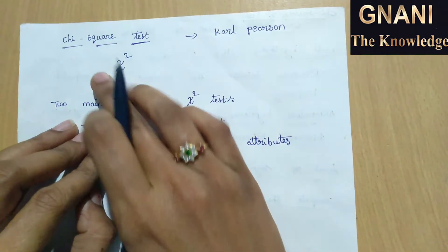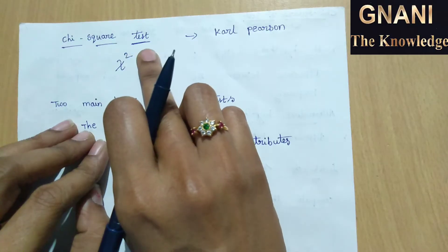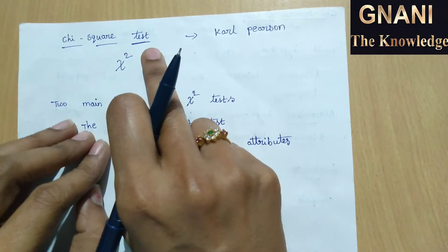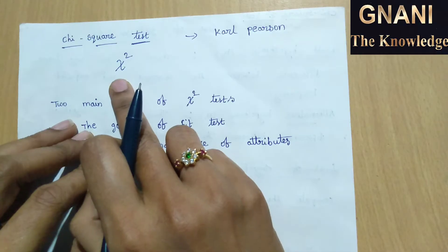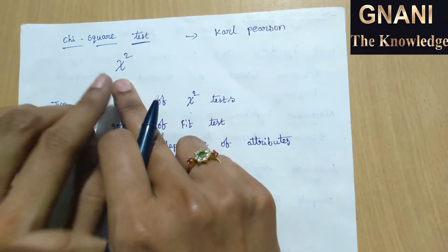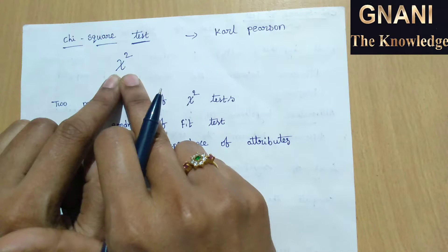Chi-square test. Chi-square test is a statistical hypothesis test. The chi-square test is also written like this. This is the symbol of chi-square test.